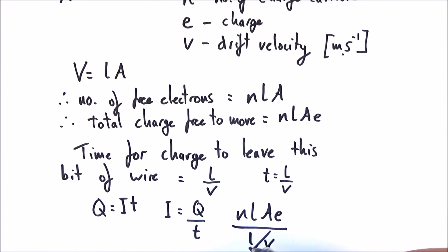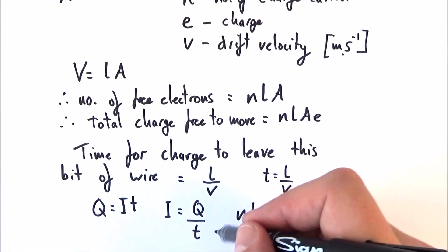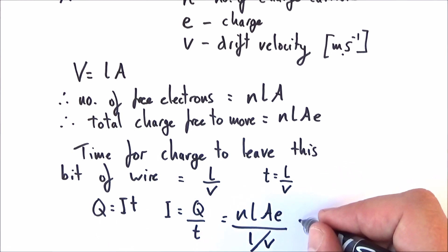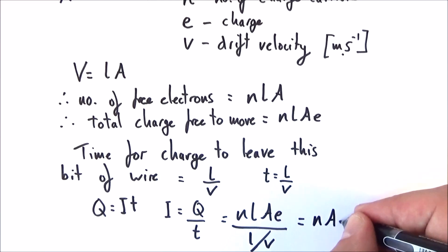Now, what we can see here is that we've got a couple of Ls. And if we do the maths, we can sort of get rid of the Ls here, and we bring the V up to the top. And we say I is equal to nAVe.